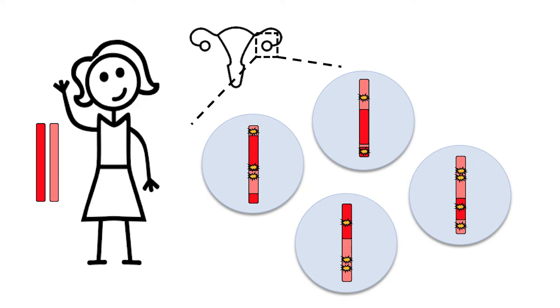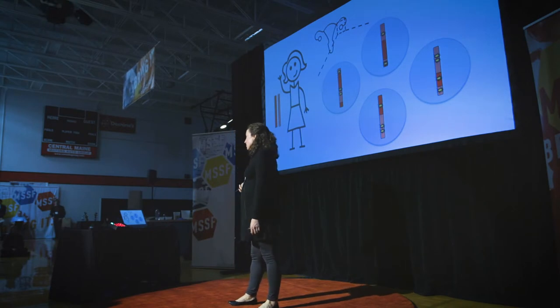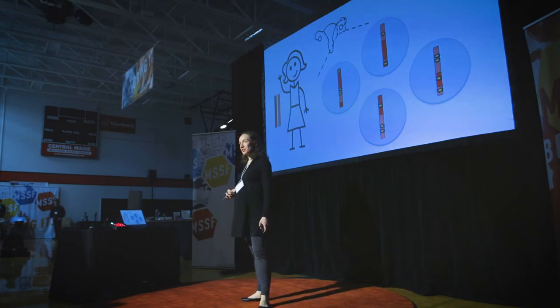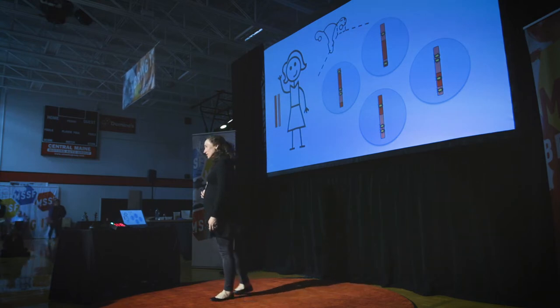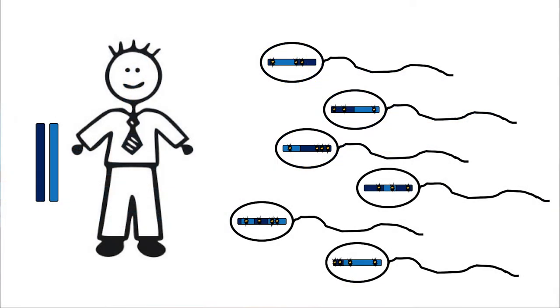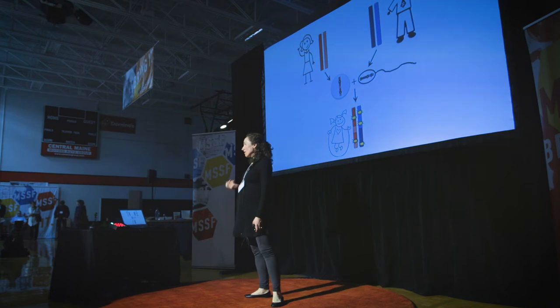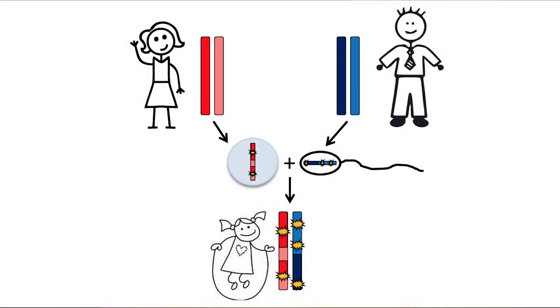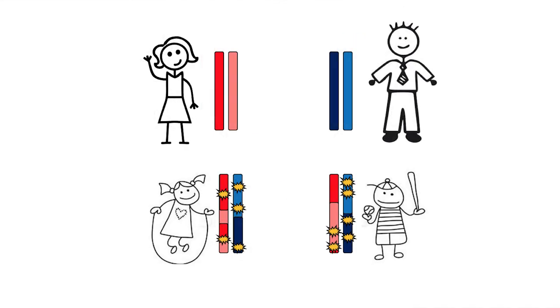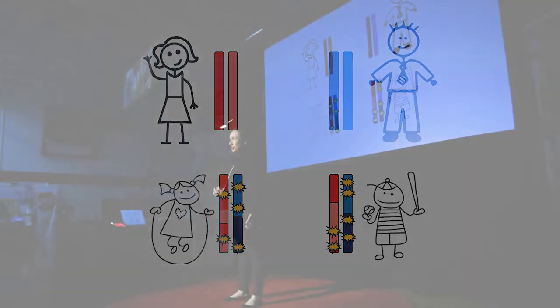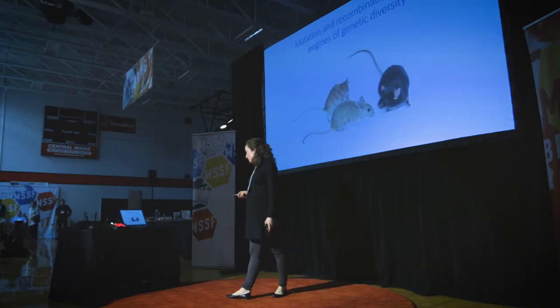Every egg inside a woman's ovaries contains a single copy of every chromosome in the genome, and this single chromosome copy has undergone recombination and accumulated a smattering of new mutations on top. Due to the inherent randomness in both the mutation and recombination processes, every egg in a woman is genetically unique. The same goes for males — every sperm cell is genetically unique. When an egg and sperm fuse in reproduction, these processes help ensure that every individual is genetically unique, even individuals with the same parents.